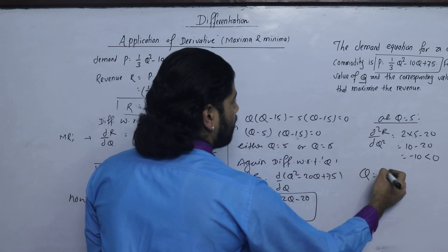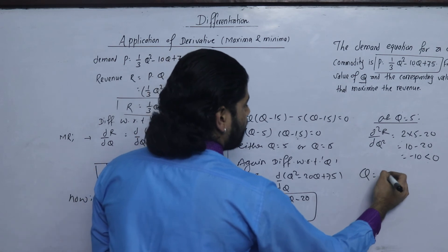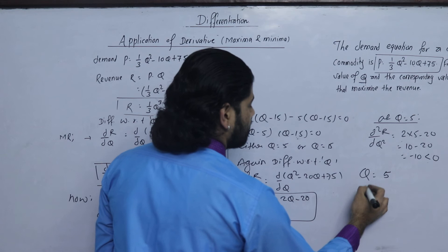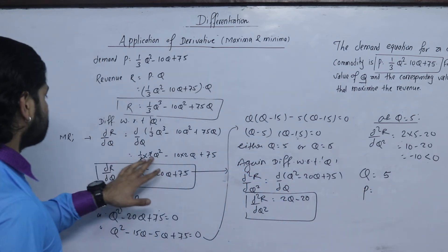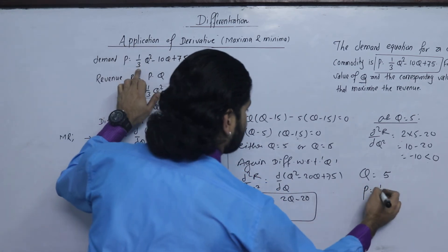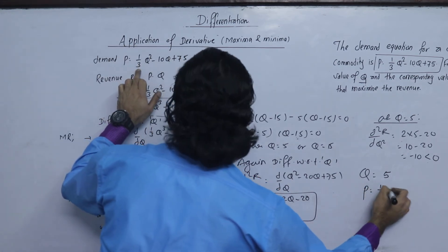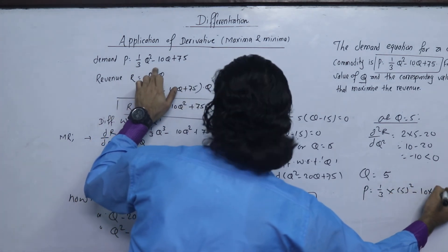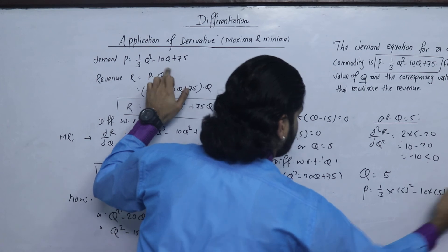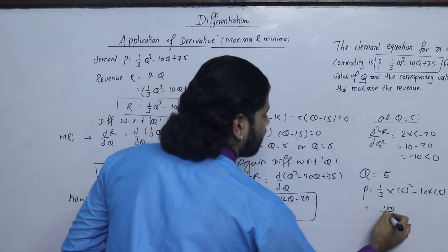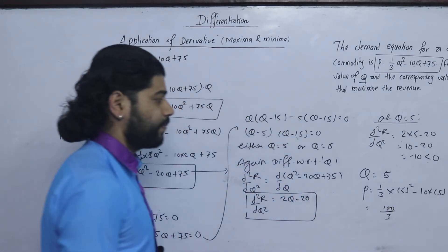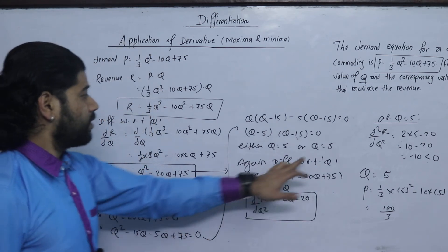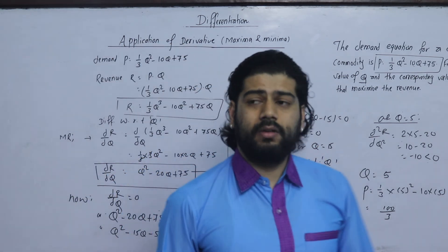Since the second order derivative is negative, Q equals 5 gives a maximum. The price P is calculated as P equals 1/3 into 5 squared minus 10 into 5 plus 75, which equals 1/3 into 25 minus 50 plus 75, giving P equals 100/3.